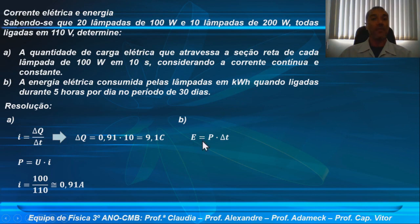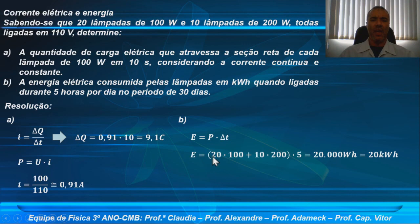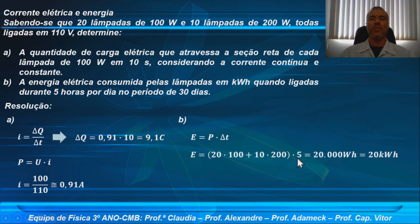Vamos substituir. Eu vou pegar a potência total. São 20 lâmpadas de 100 watts, então no total eu vou ter 20 vezes 100, adicionado com as 10 lâmpadas de 200 watts. Então: 20 vezes 100, que representa o total de potência das 20 lâmpadas de 100 watts, adicionado a 10 vezes 200, que é o total da potência das lâmpadas de 200 watts. Tudo isso vezes 5 horas de funcionamento no dia, resultando em 20 mil watts-hora.